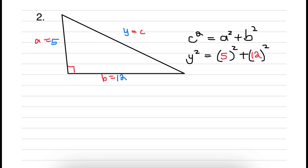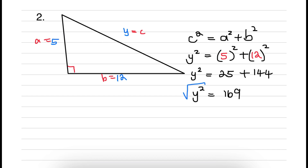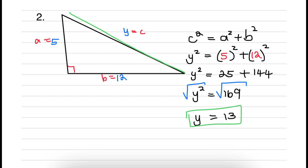Now square those values: 5 times 5 is 25 and 12 times 12 is 144. The sum of 144 plus 25 is equal to 169. Taking the square root on both sides to get y by itself: the square root of 169 is 13. So the length of that line would be 13 units.